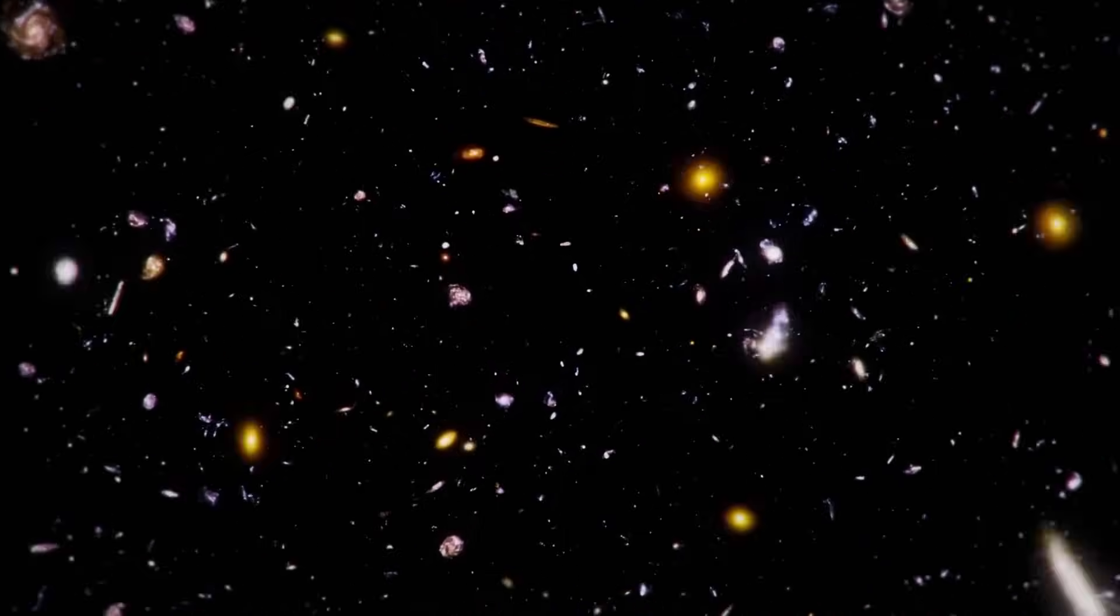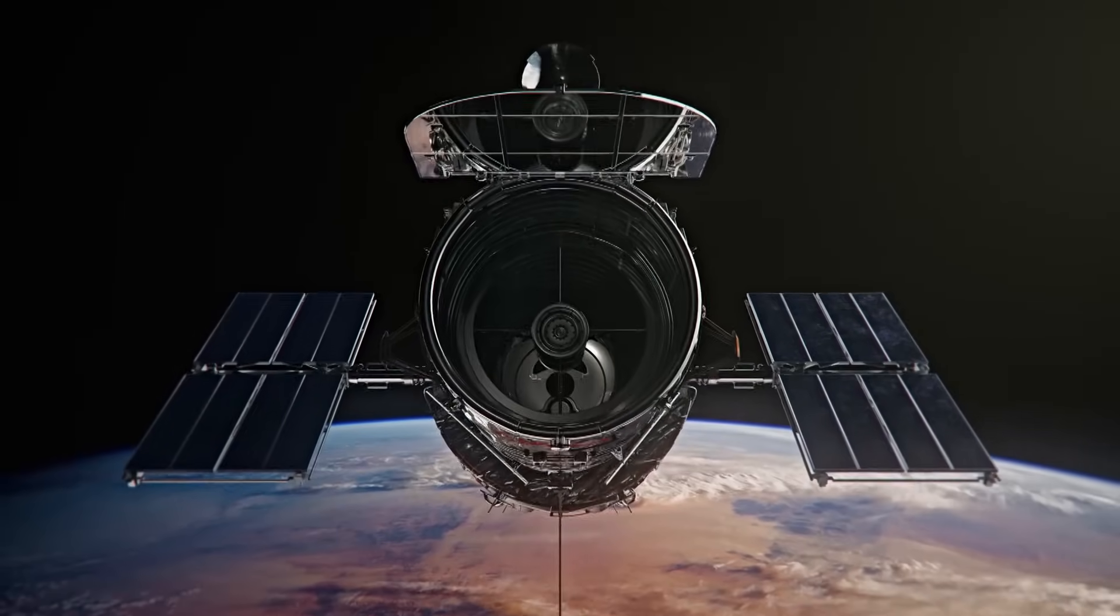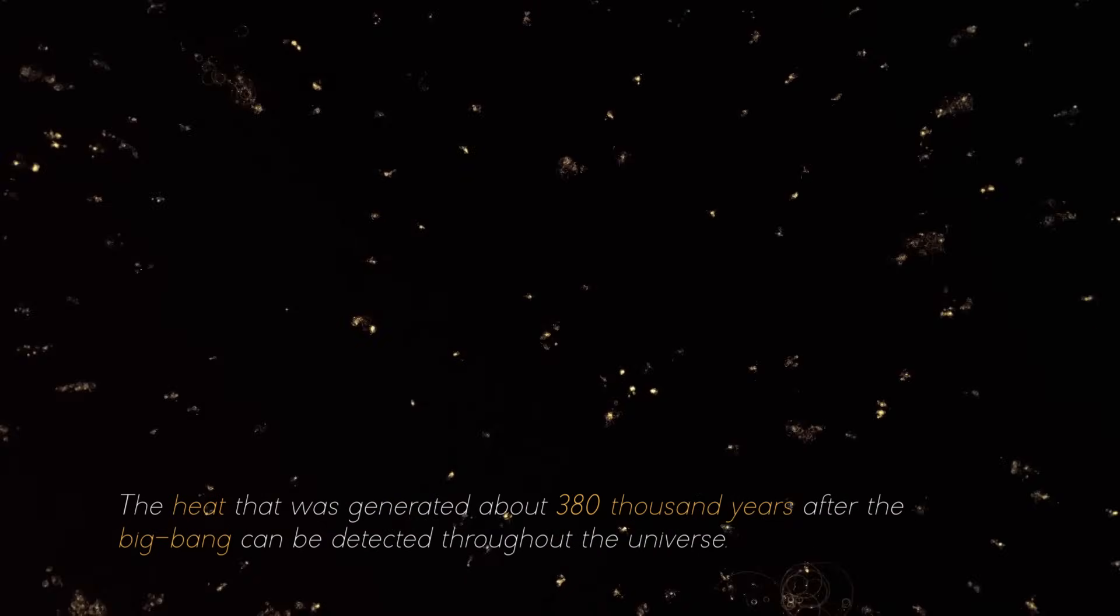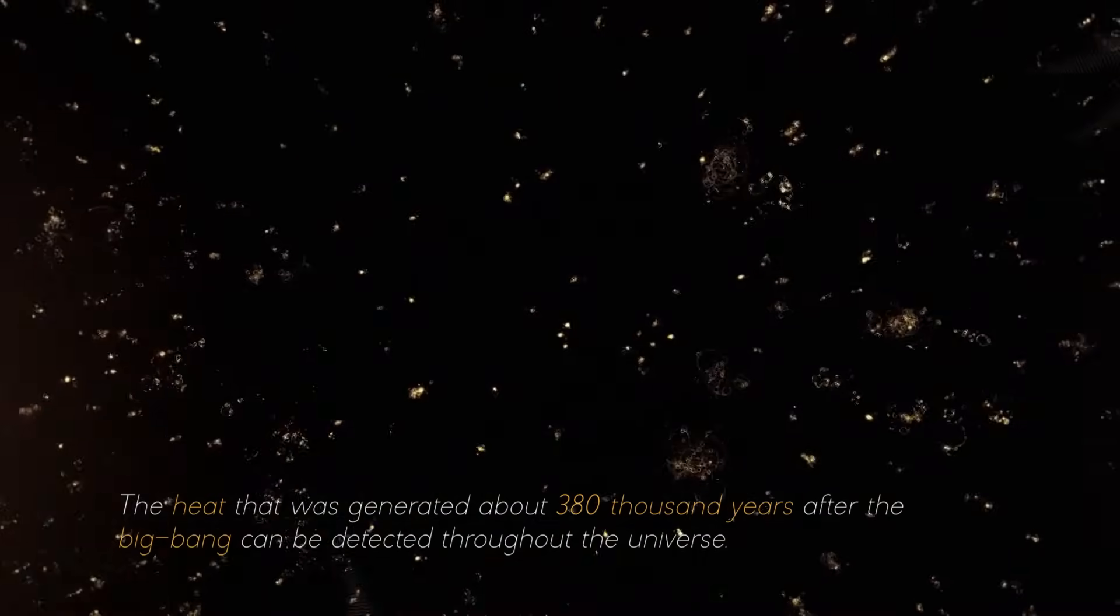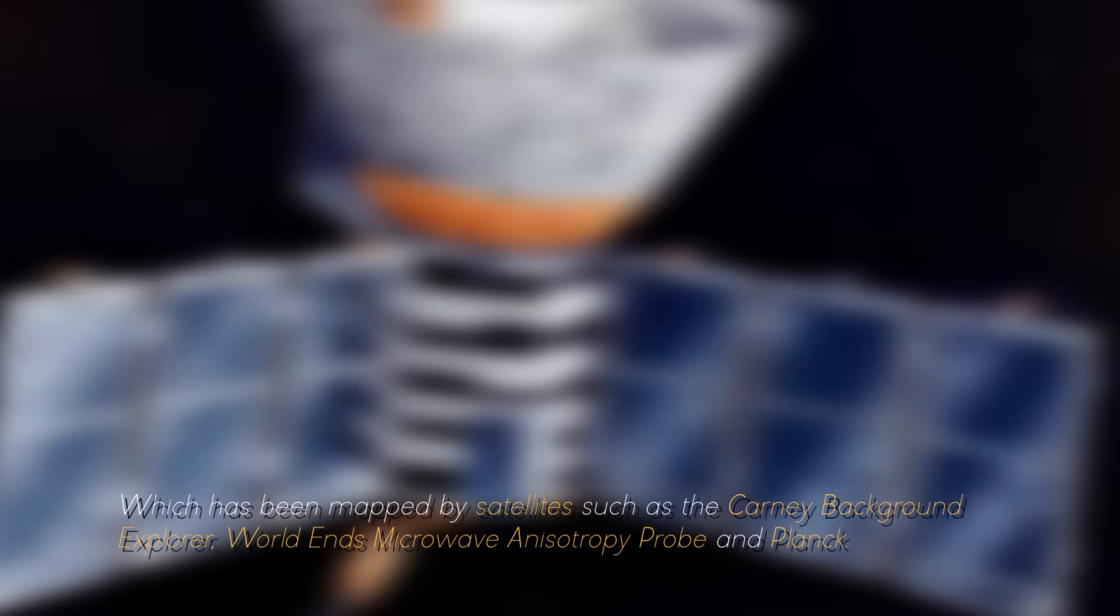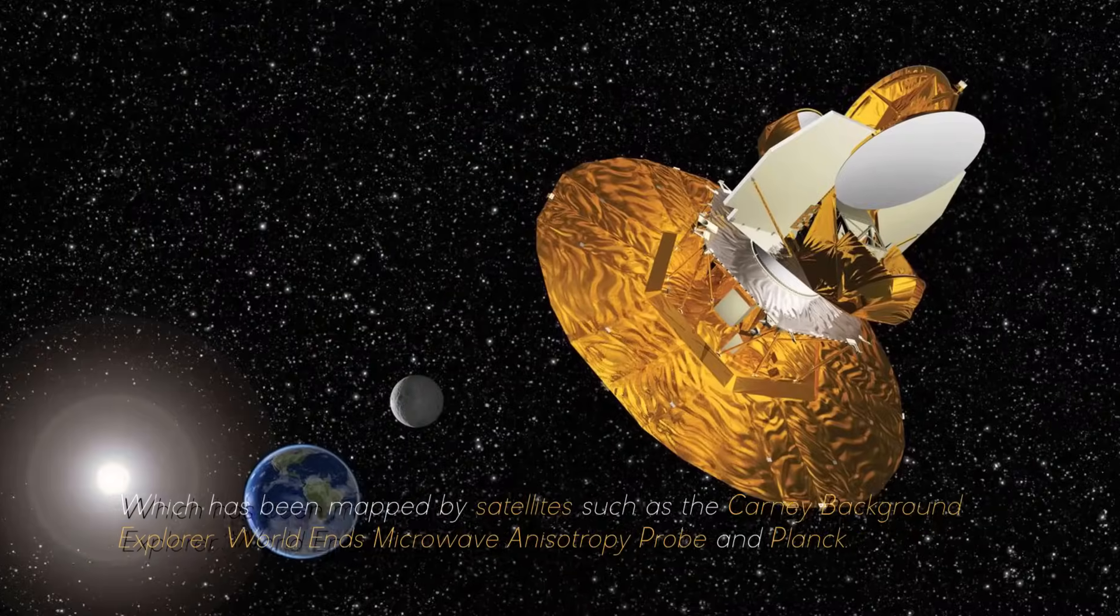This process occurred over time, not a specific point, and galaxies are moving away from each other without a definite center. Although we cannot directly observe the Big Bang, there is observable evidence for it. For example, the heat that was generated about 380,000 years after the Big Bang can be detected throughout the universe, which has been mapped by satellites such as the Cosmic Background Explorer, WMAP, and Planck.